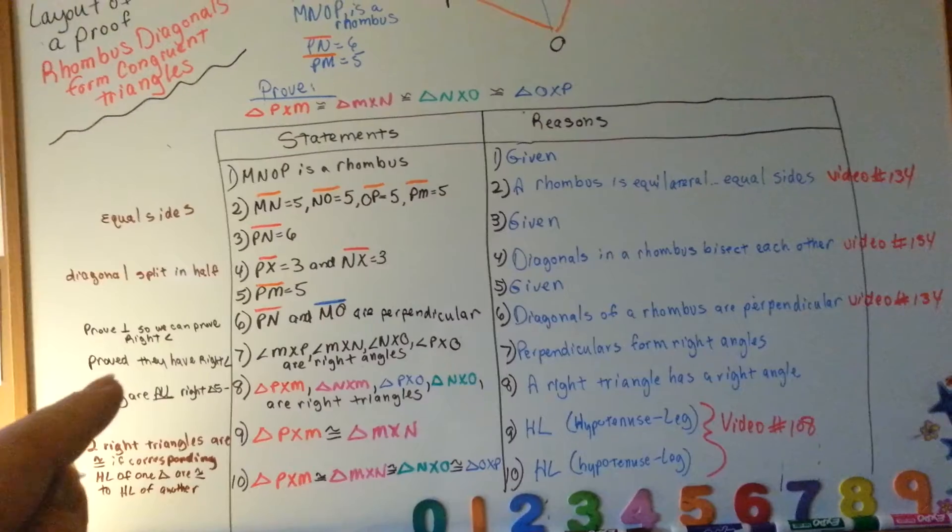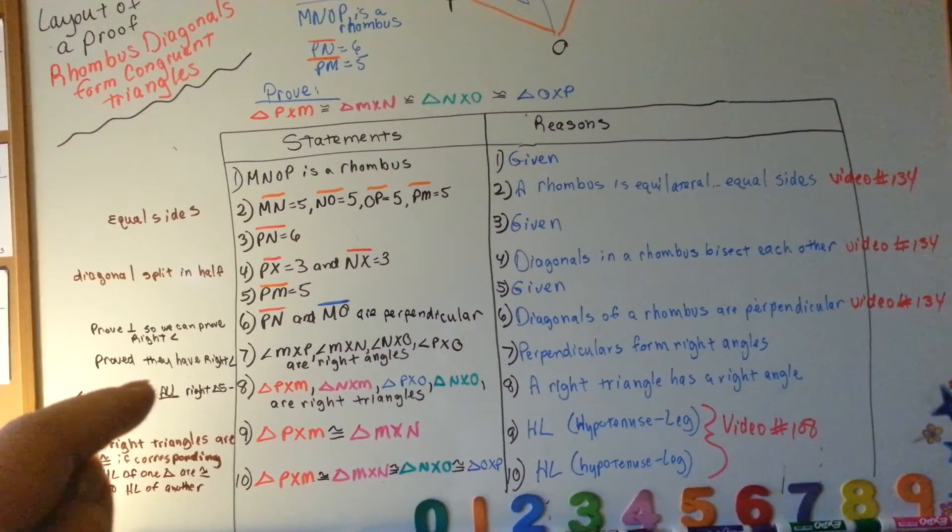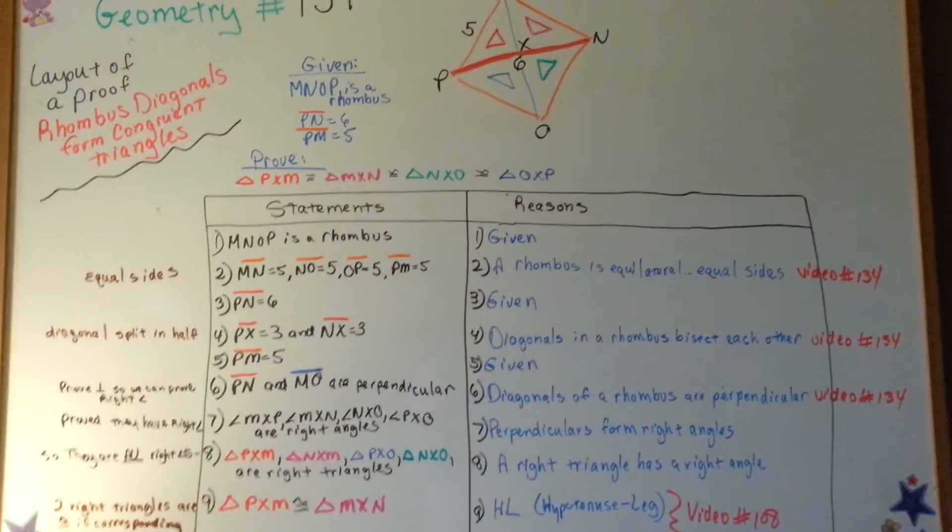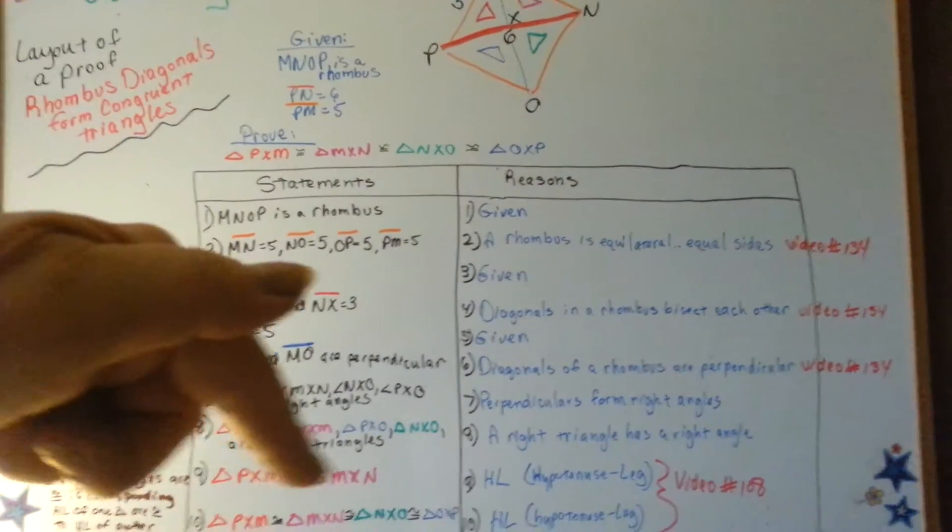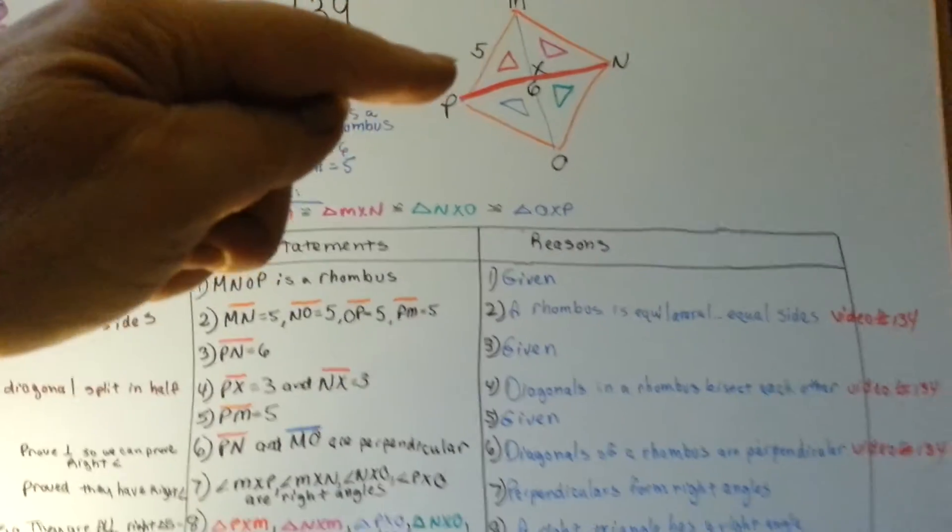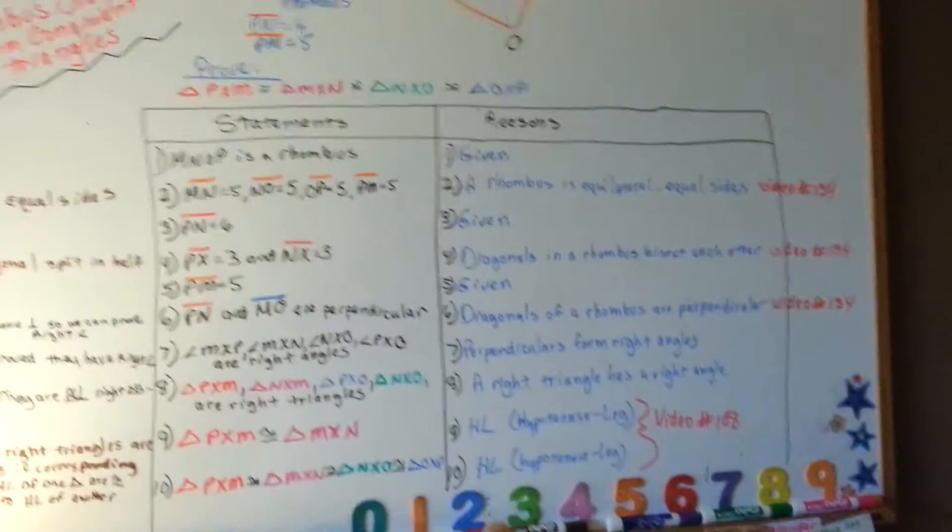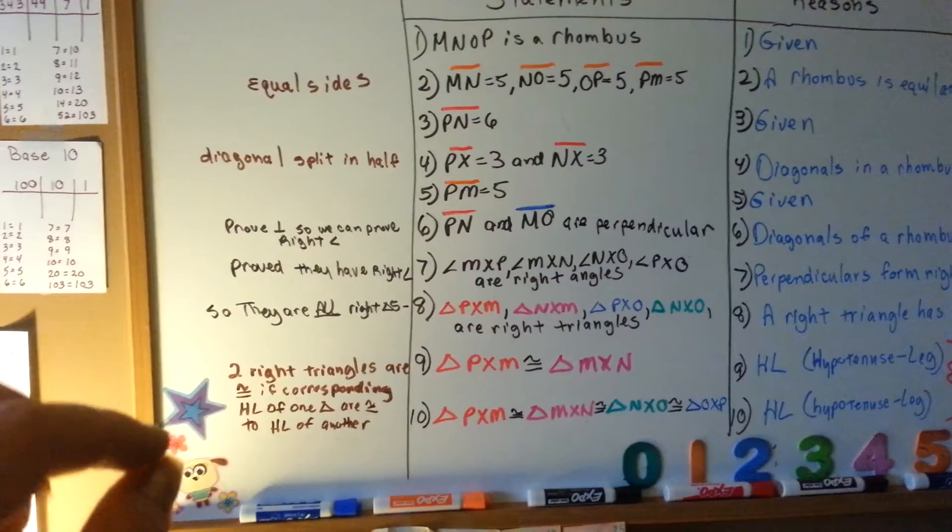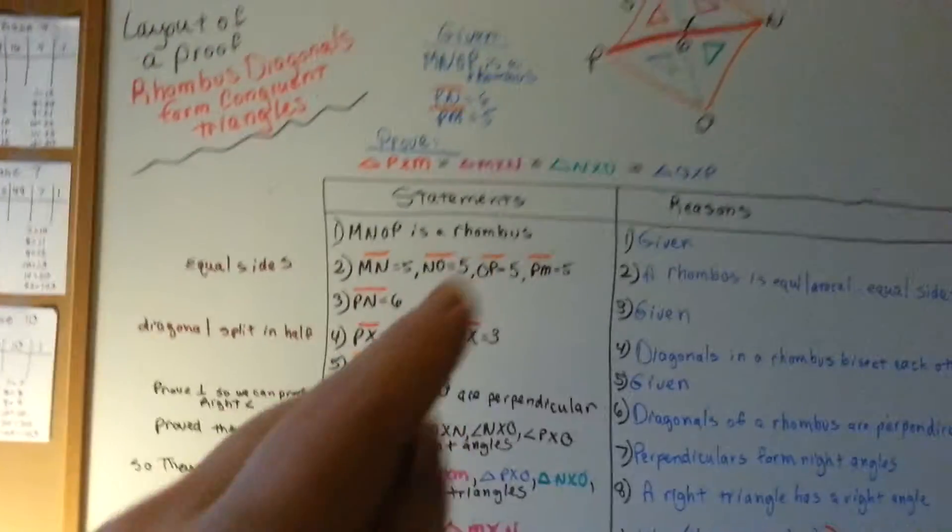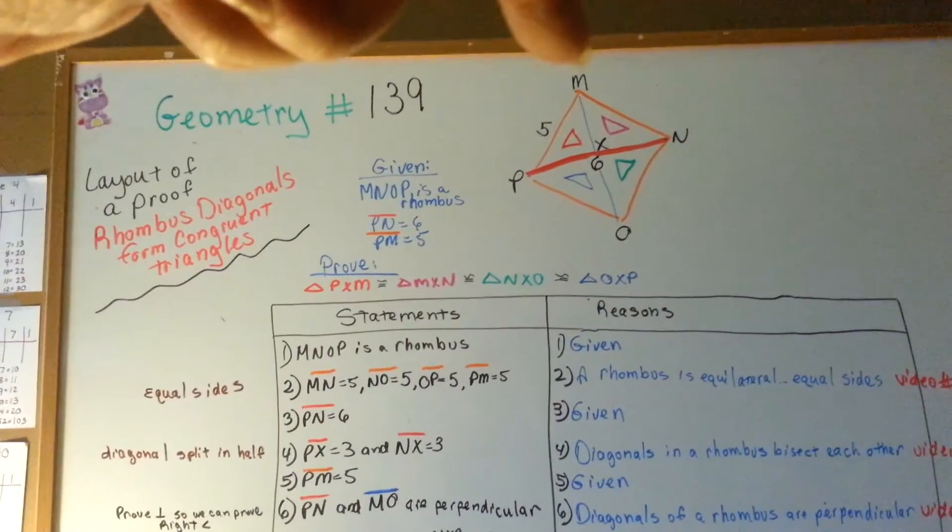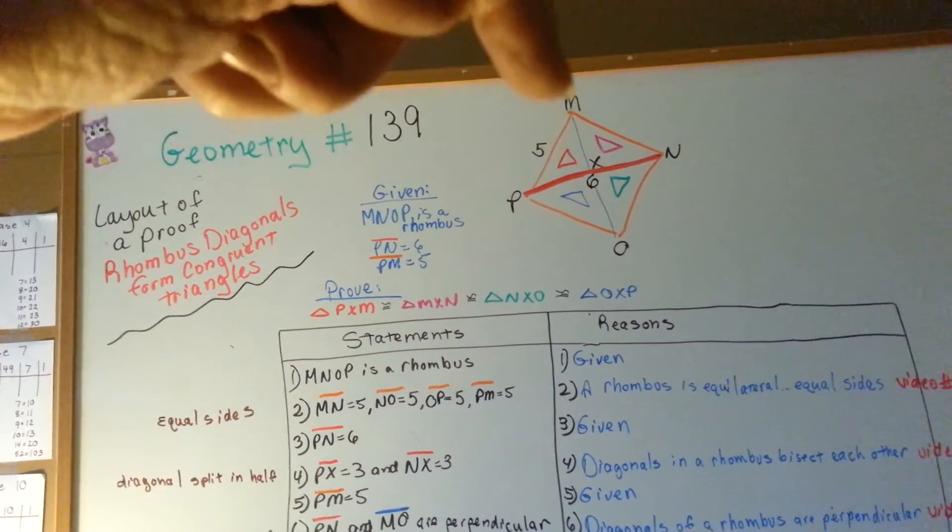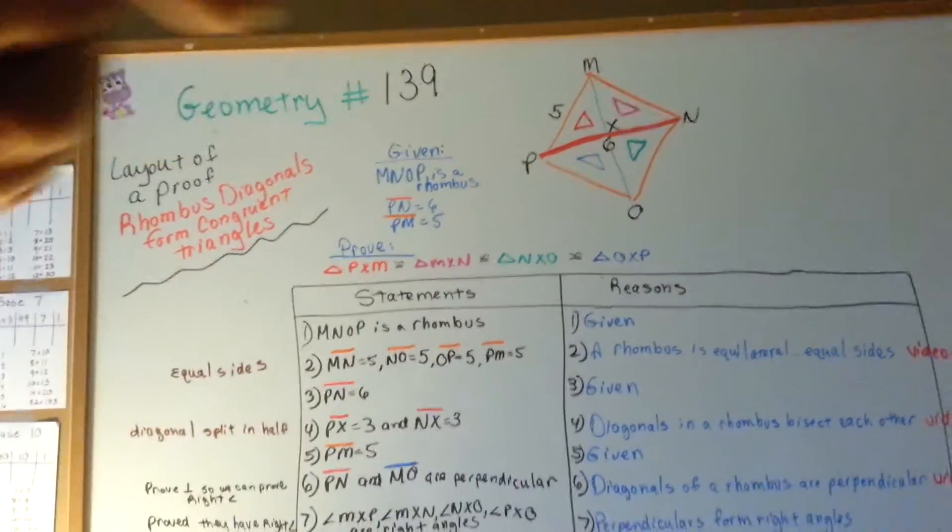All right, so we've proved that there were right angles and that right angles make right triangles. So now we can say that PXM, the red one, is congruent to the pink one because of the hypotenuse leg principle. The hypotenuse leg principle is from video 108. If you don't know what that is, go back and watch it. But it pretty much says two right triangles are congruent if corresponding hypotenuse and leg of one triangle are congruent to the hypotenuse and leg of another triangle. So because the hypotenuse, this outside orange line, and this MX line are congruent to each other, we've used hypotenuse leg.